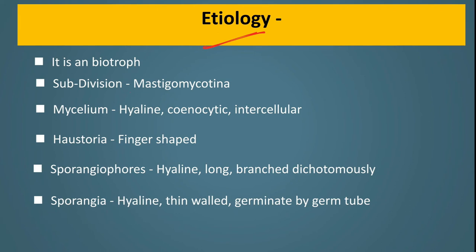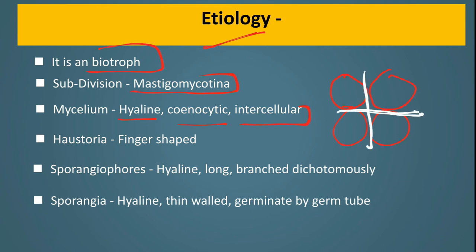Etiology: Peronospora belongs to subdivision Mastigomycotina. It is a biotroph fungus, meaning it can gain nutrition only from living tissue and cannot take nutrition from dead tissue. It has hyaline, coenocytic and intercellular mycelium. The mycelium grows between the cells, and through haustoria it takes nutrition from plant cells. The mycelium color is hyaline and cross walls are absent.